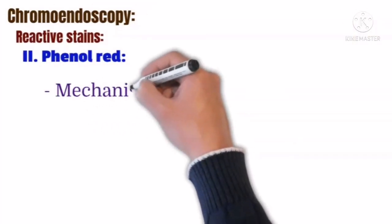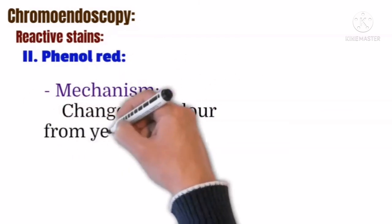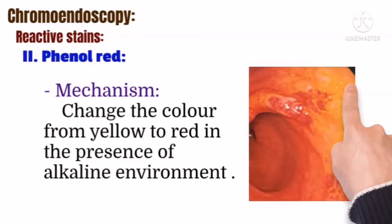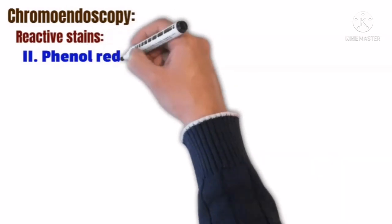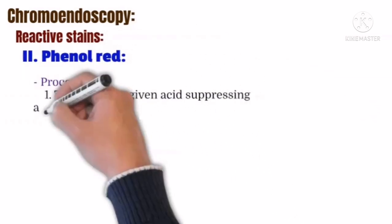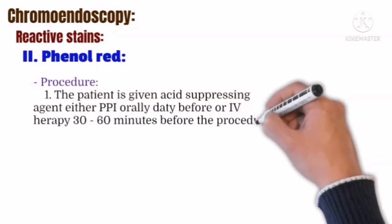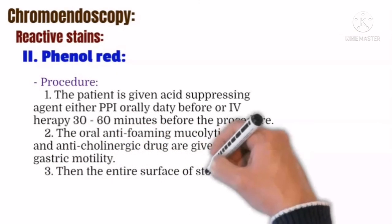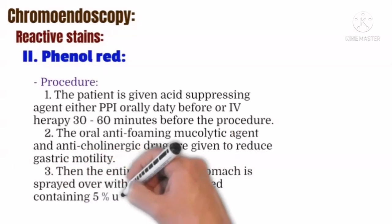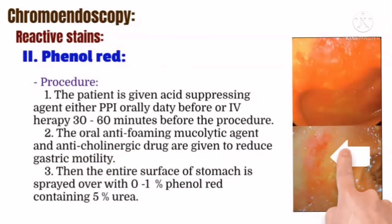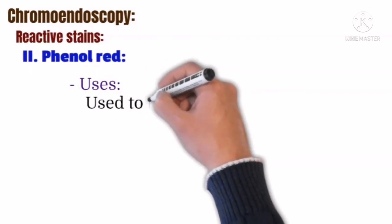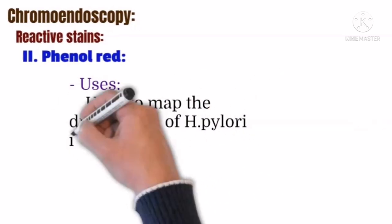The second reactive stain is phenol red, which changes color from yellow to red in the presence of alkaline media, as shown in this image. Before application, the patient is given an acid-suppressing agent, either a PPI orally the day before or intravenous therapy 30 to 60 minutes before the procedure. Oral anti-foaming mucolytic agents and anti-cholinergic drugs are given to reduce gastric motility. Then the entire surface of the stomach is sprayed with 0.1% phenol red containing 50% urea. Phenol red chromoendoscopy is used to map the distribution of areas infected by Helicobacter pylori in the gastric mucosa.